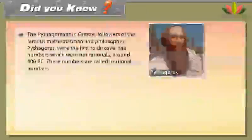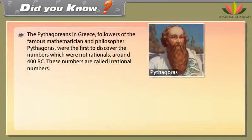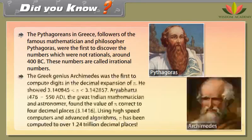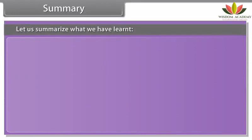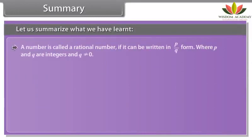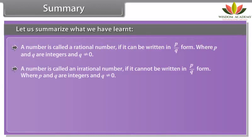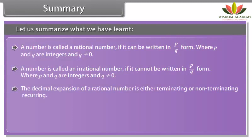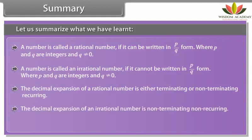Did you know? The Pythagoreans in Greece, followers of the mathematician Pythagoras, were the first to discover irrational numbers around 400 B.C. The Greek genius Archimedes was the first to compute digits in the decimal expansion of π, showing 3.140845 < π < 3.142857. Aryabhata (476–550 AD), the great Indian mathematician and astronomer, found the value of π correct to 4 decimal places: 3.1416. Using high-speed computers and advanced algorithms, π has been computed to over 1.24 trillion decimal places.